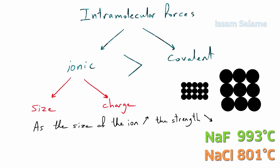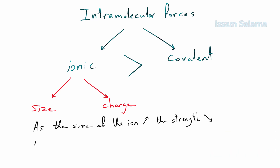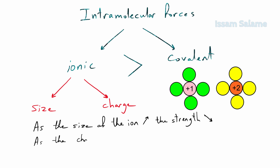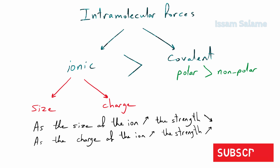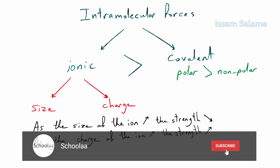Regarding the charge of ions in ionic compounds, as the charge increases the strength of the ionic bond increases. Regarding covalent bonding, polar bonds are stronger than non-polar bonds, which means polar compounds should have higher melting and boiling points than non-polar compounds. If you don't know the difference between polar and non-polar, you may watch my previous video.